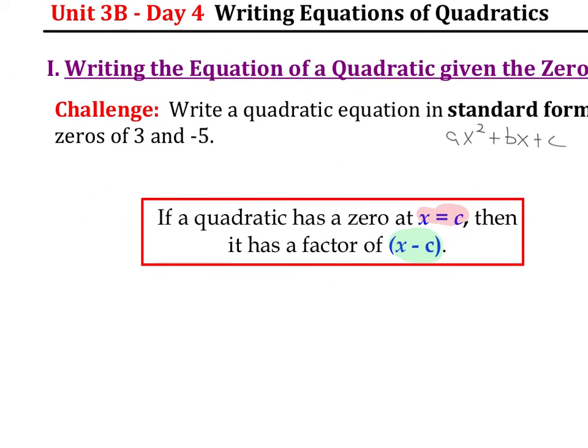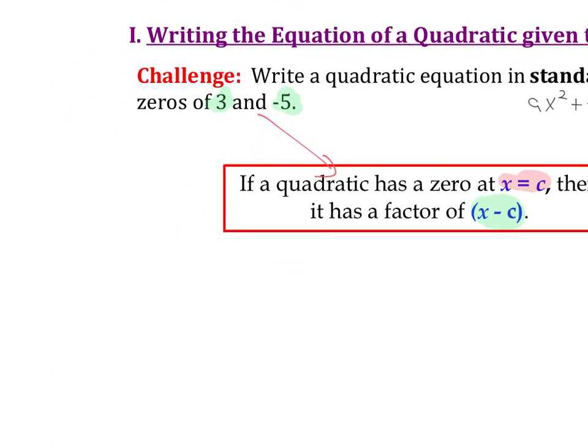Now they're telling us that we have zeros at 3 and negative 5. Well, if I apply the logic right here, I can then say if there's a zero at 3, then there has to be a factor of x minus 3 that would produce that. Similarly, if there's an x-intercept or a zero at negative 5, then I have to see a factor of x plus 5. Remember, the values of your zeros, it's always going to be the opposite of what you see in the factor.